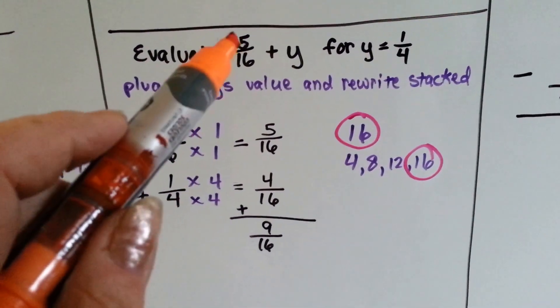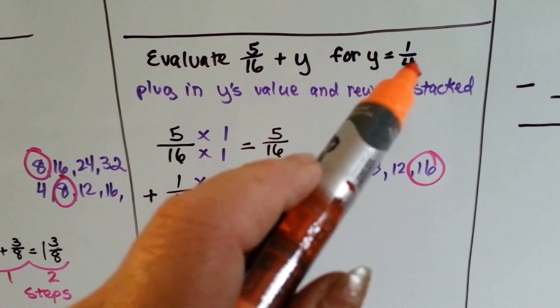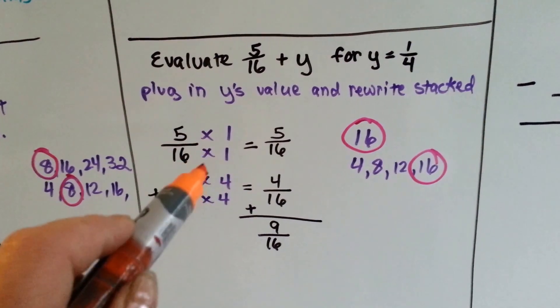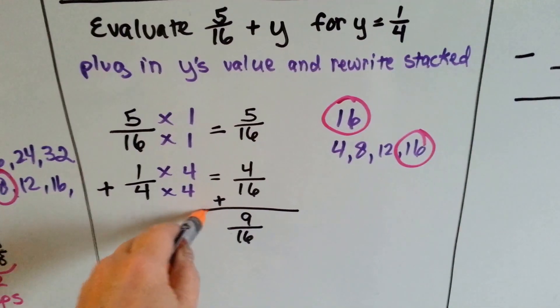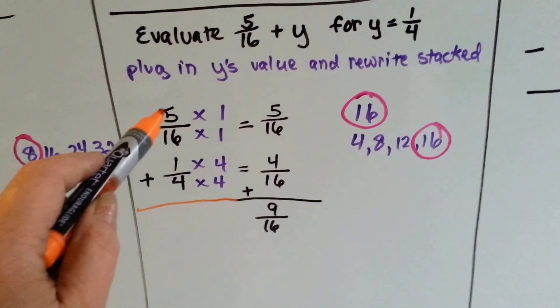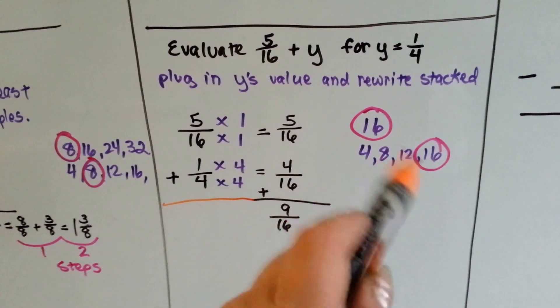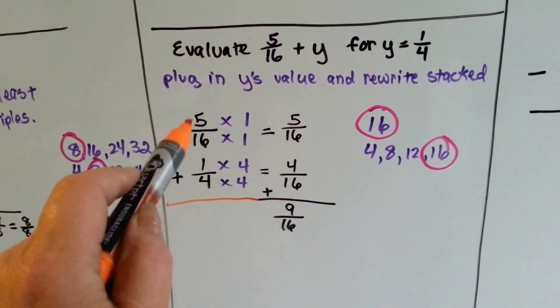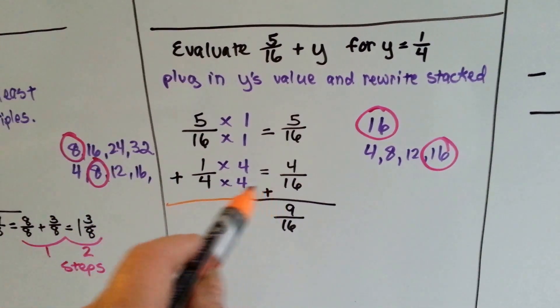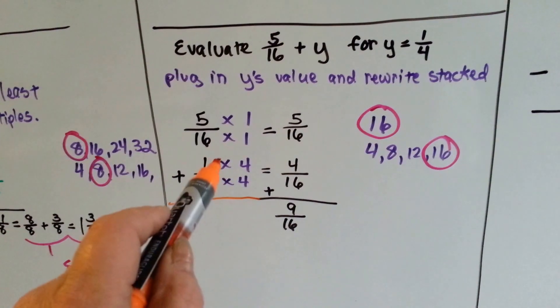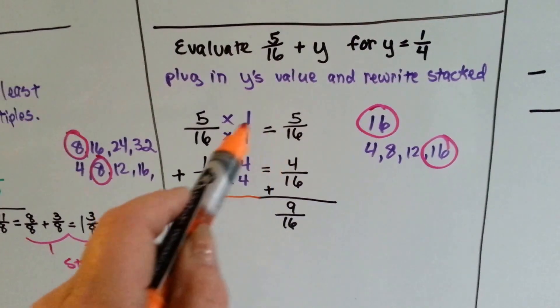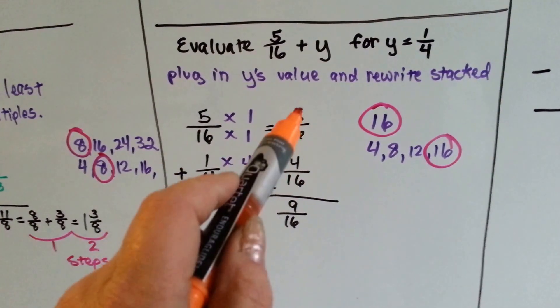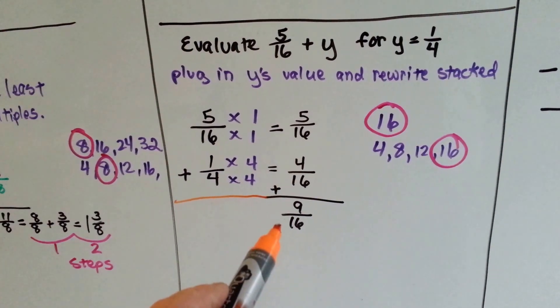If it says to evaluate 5/16 plus y for y equals 1/4, we just plug the y in to the equation and rewrite it as stacked. So we have 5/16 and 1/4. We list the common multiples and realize they can meet at 16's house, so he doesn't have to move at all. The 4 is going to come to his house. What does 4 need to become 16? It needs to be multiplied by 4 and the 1 gets jealous, so it gets multiplied by 4. He's already home, so he's multiplied by 1 and stays the same. This is addition, so we add the 5 and the 4 and get 9. We get 9/16. Pretty easy.